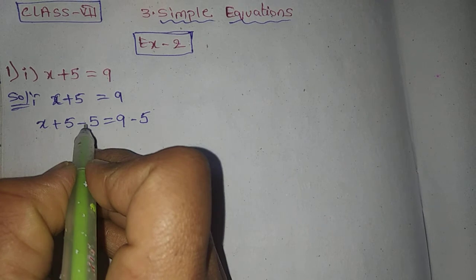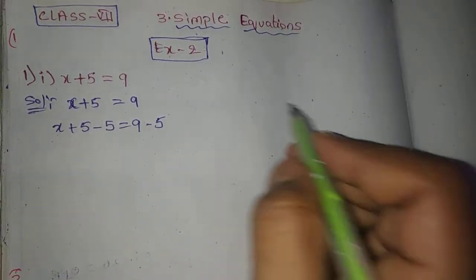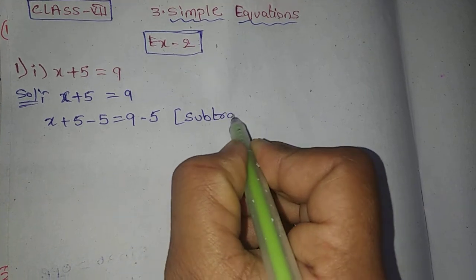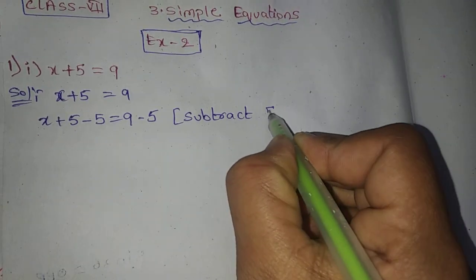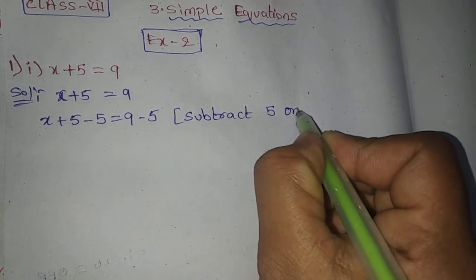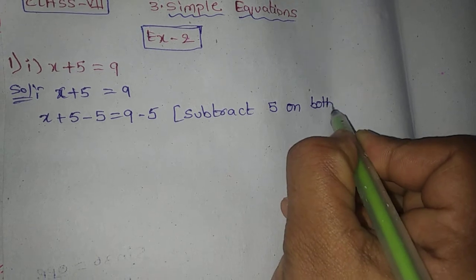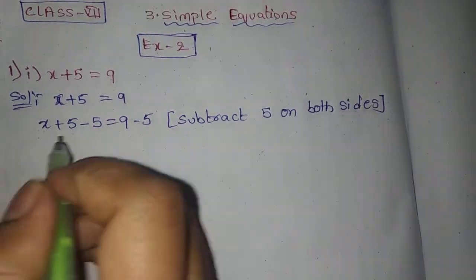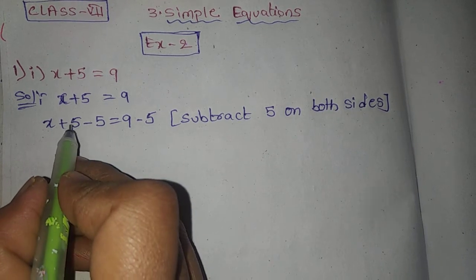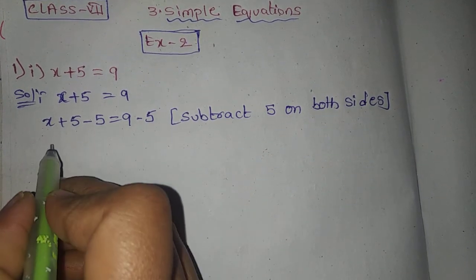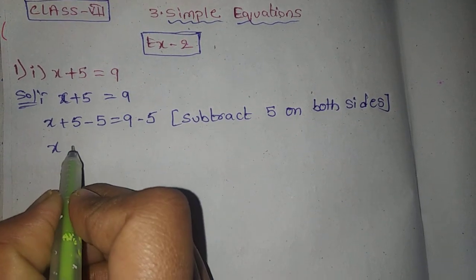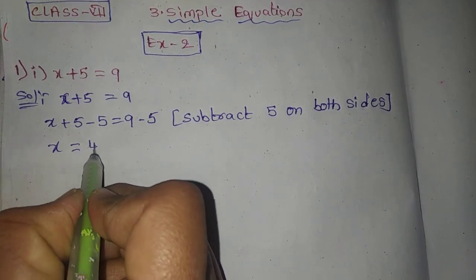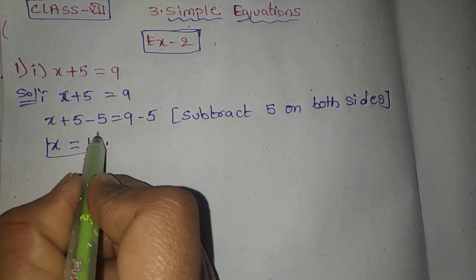We cancel this equation. Plus 5 minus 5 is equal to 0. So x plus 0 is equal to x. 9 minus 5 is equal to 4. So x value is equal to 4.